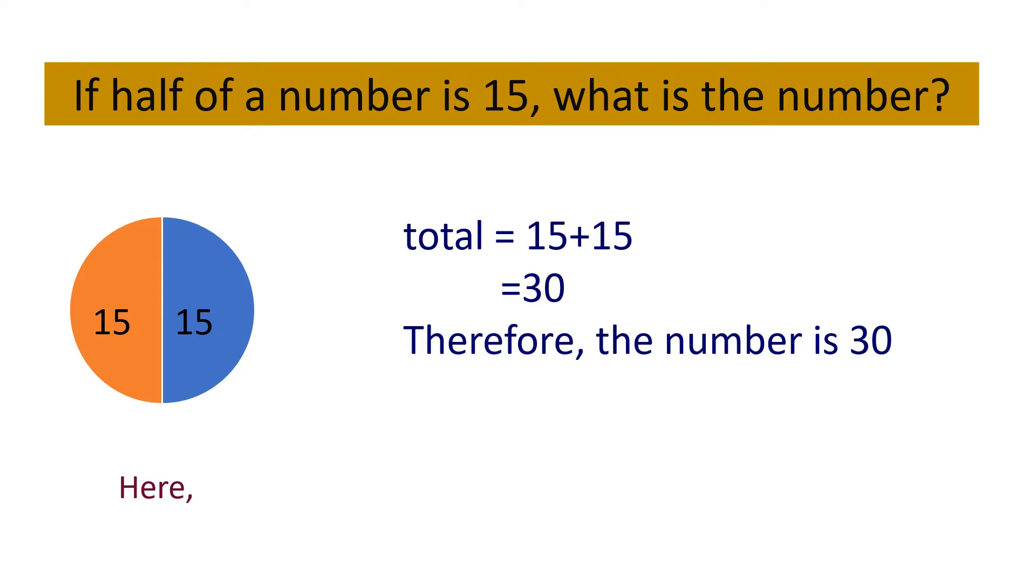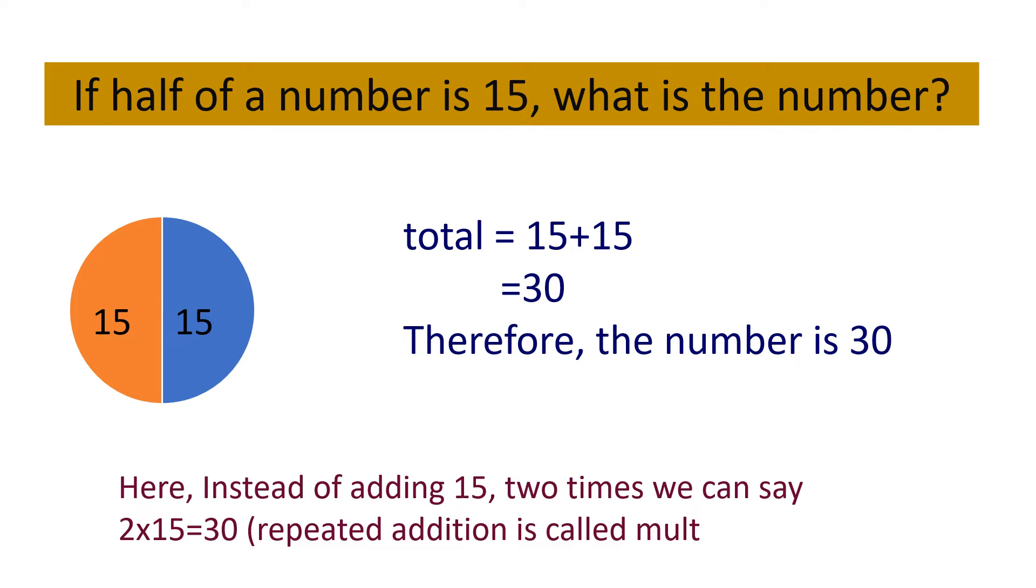Here, instead of adding 15 two times, we can also say that 2 times 15, that means 2 into 15 equal to 30. Because we know the repeated addition is called multiplication.